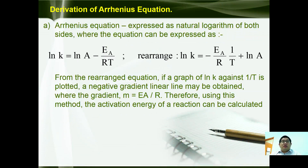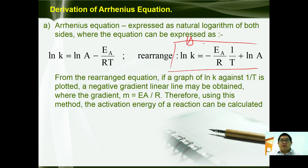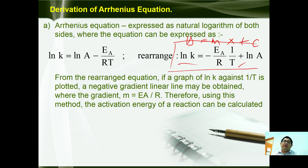This equation can also be expressed by taking the natural logarithm of both sides, giving: ln k = ln A − Ea/RT. Rearranging in terms of 1/T, we get: ln k = (−Ea/R)(1/T) + ln A. Comparing this to y = mx + c, when you plot a graph of ln k against 1/T, you get a negative gradient graph, which can be used to determine the activation energy of the reaction, where the gradient m = −Ea/R.